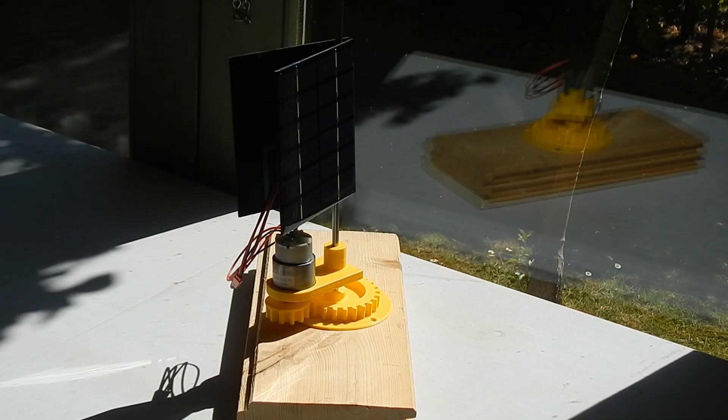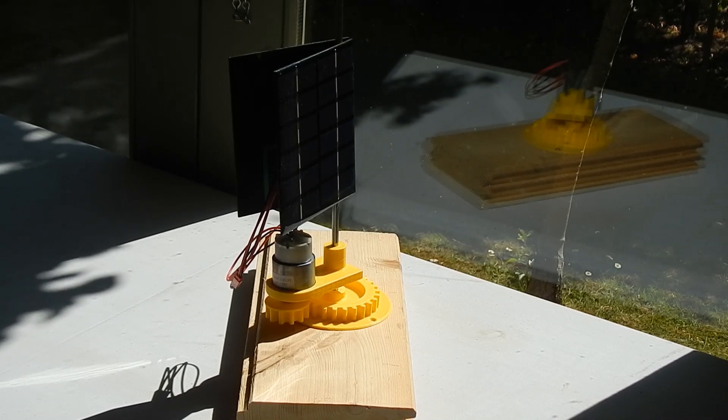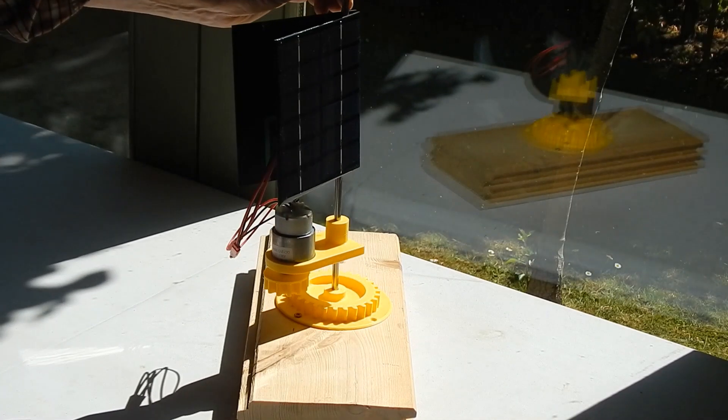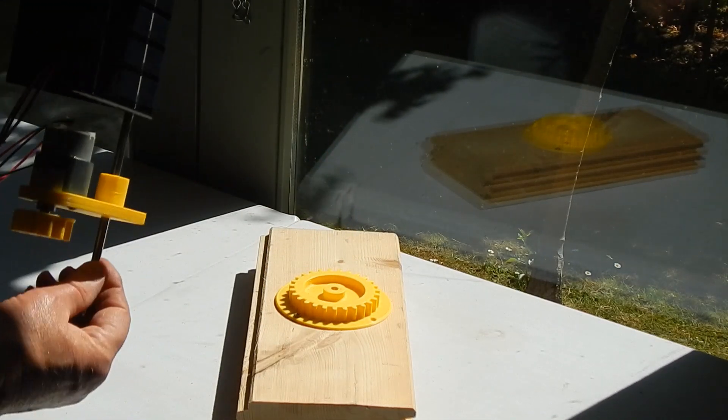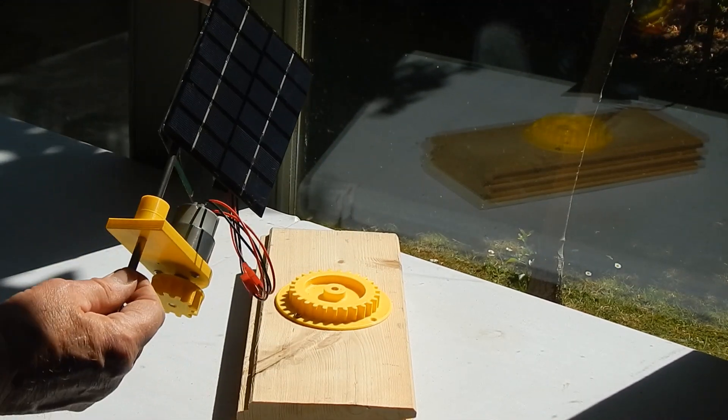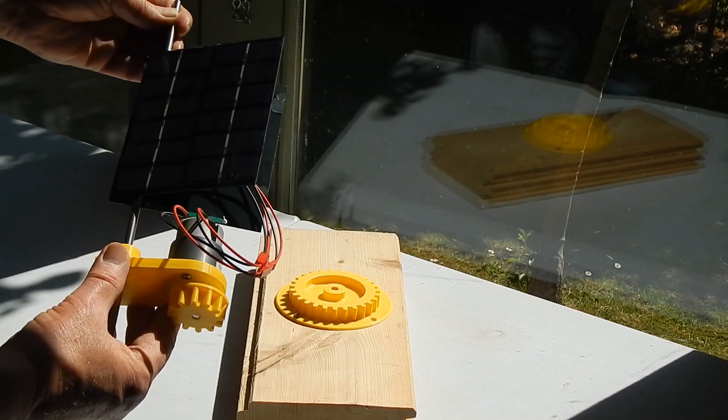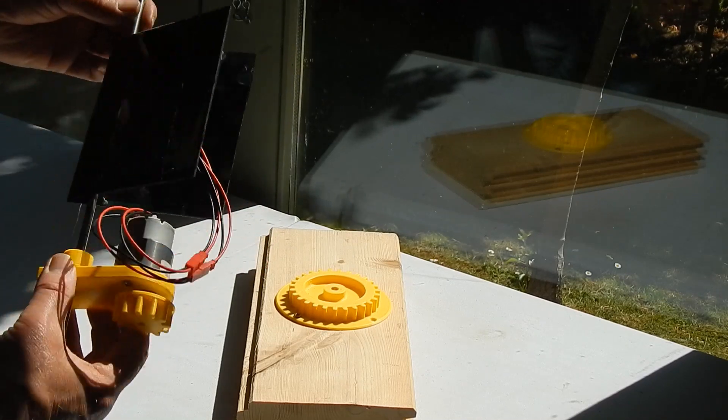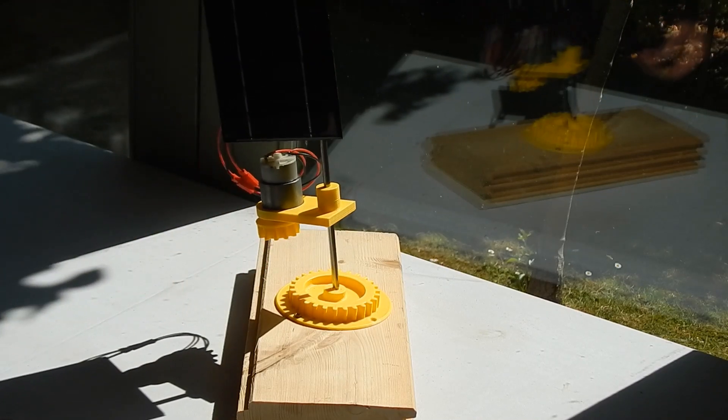So this is a very basic, simplest sort of solar tracker. Completely self-contained, it's got just a motor and a gearbox and two solar cells. I'll show you how that goes together.